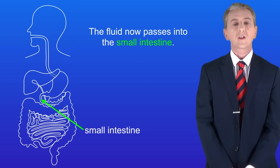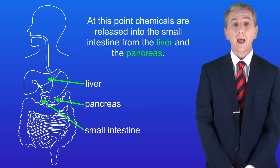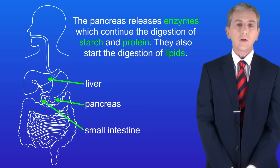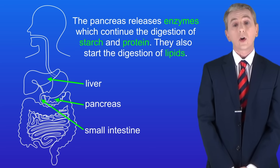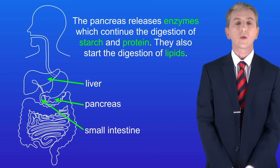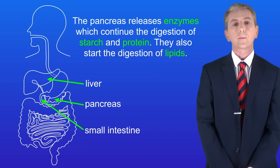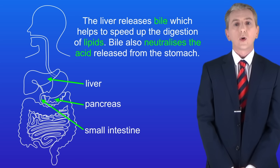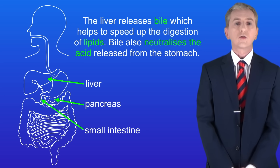The fluid then passes into the small intestine. At this point, chemicals are released into the small intestine from the liver and the pancreas. The pancreas releases enzymes which continue the digestion of starch and protein, and also start the digestion of lipids. The liver releases bile which helps to speed up the digestion of lipids. Bile also neutralizes the acid released from the stomach.